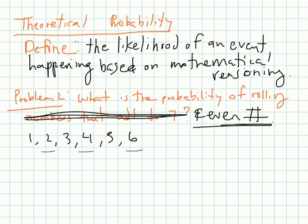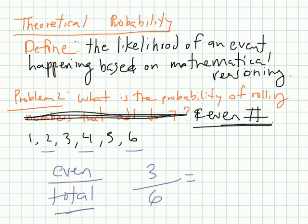How many of these are even? Two, four, six, there's three. So that means I'm looking for the even numbers over the total possible amount of numbers. So the even is three. The total of sides is six. If I divide that, I get 0.5 multiplied by 100 to get my percent. It's 50%. So that means there's a 50% chance of rolling an even number.